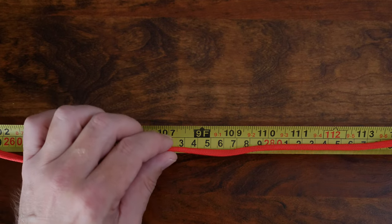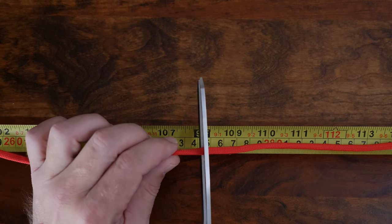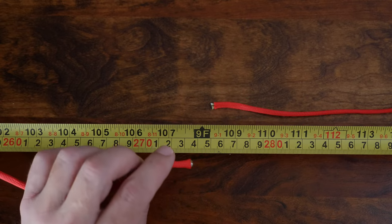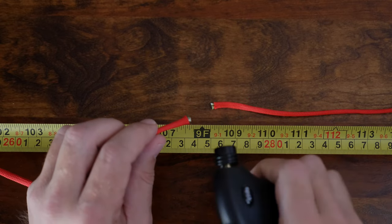To begin you're going to cut your length of paracord. Depending on your wrist size you'll need between 8 to 10 feet of paracord. I'm going to use 9 feet or 274 centimeters.